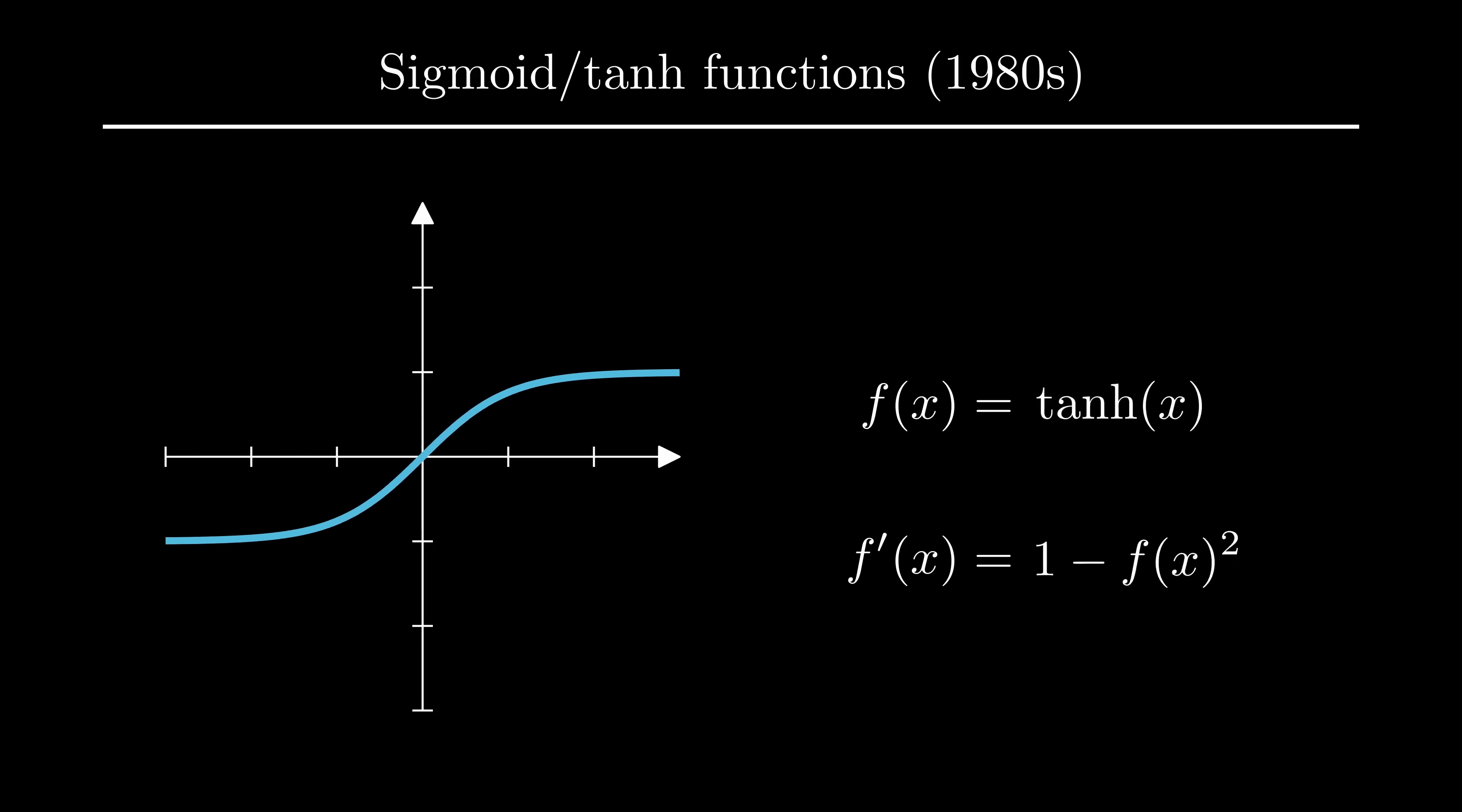There is one issue though, namely that the functions flatten out quite quickly for high or low values. This means that the gradient there is small, leading to slow training.